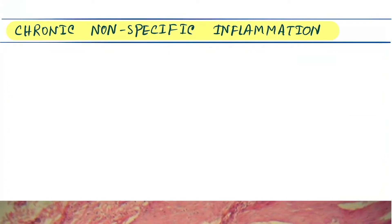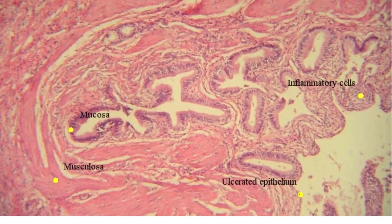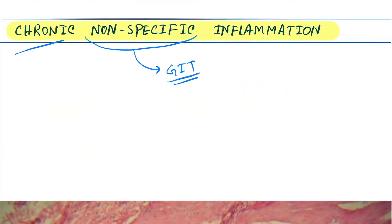Hello friends, today our topic is chronic non-specific inflammation. It is non-specific, meaning it can occur at any place of the GIT — the digestive tract. Being chronic, as a result there is formation of the ulcer.